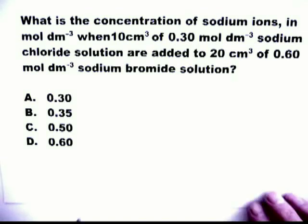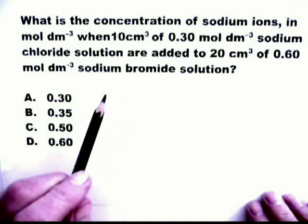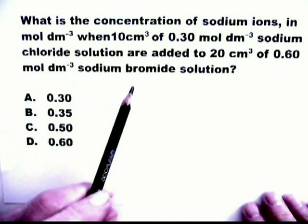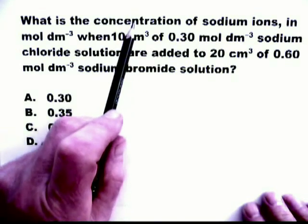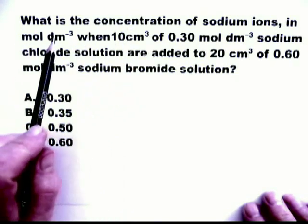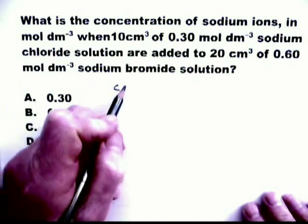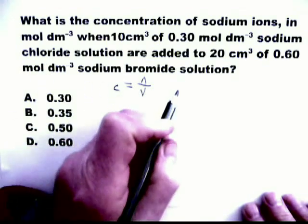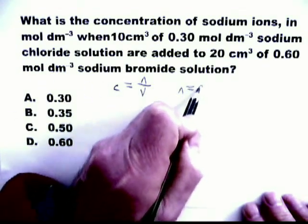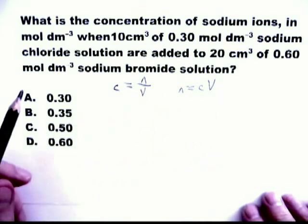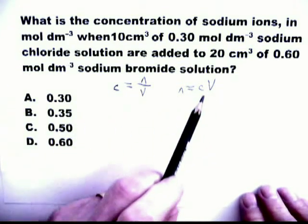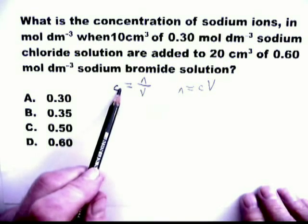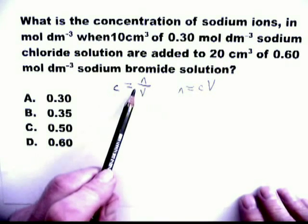So we're going to use the formulas that we developed before, which are in the questions. Concentration equals moles divided by volume. C equals N over V. Rearrange it. N equals CV. So we use N first of all, to calculate N first of all, from that formula, and then calculate the concentration from the other formula.